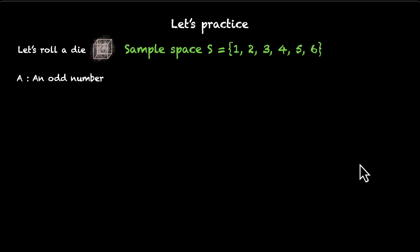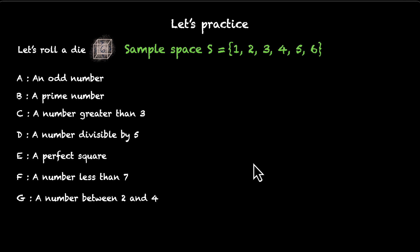The first one is the event A, which is an odd number. Then you have B, a prime number. C, a number greater than 3. D, a number divisible by 5. E, a perfect square. F, a number less than 7. G, a number between 2 and 4. And H, a number between 1 and 6. So, pause the video. Think about these events. Figure out what their complements are.